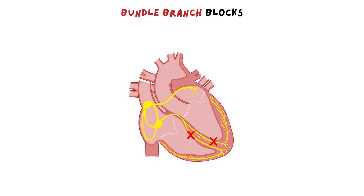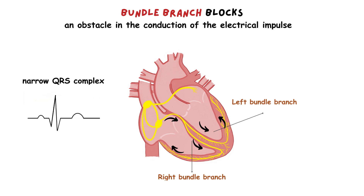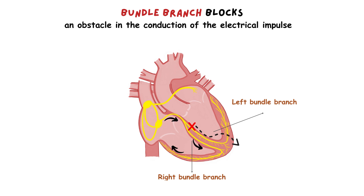Lastly, we have bundle branch blocks — an obstacle in the conduction of the electrical impulse through the bundle branches. Normally, the impulse is conducted quickly to both ventricles at the same time, recorded on the ECG as a normal narrow QRS complex. But when there is a blockage in one bundle branch, the depolarization of the ventricles does not happen at the same time, and one ventricle is depolarized later than the other. The depolarization of the ventricle supplied by the blocked branch is much slower because the wave spreads through the myocytes surrounding the blocked area rather than through the normal conducting pathways.